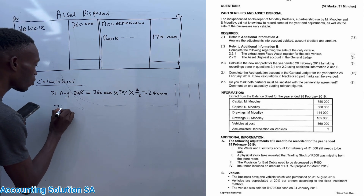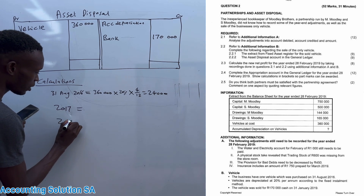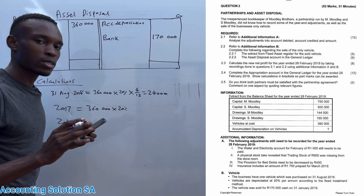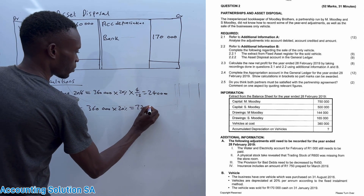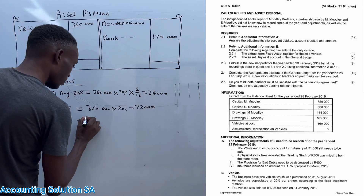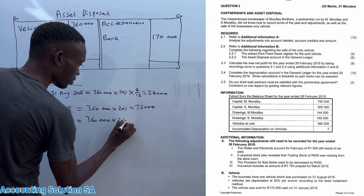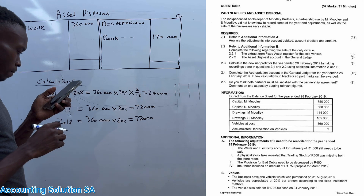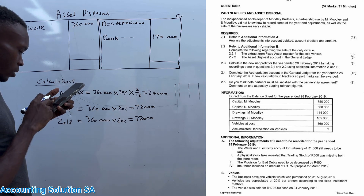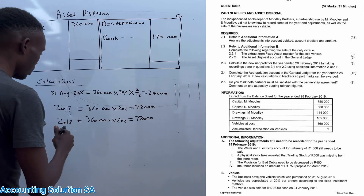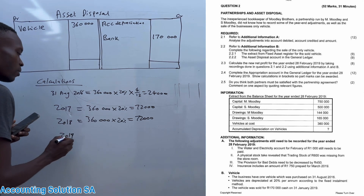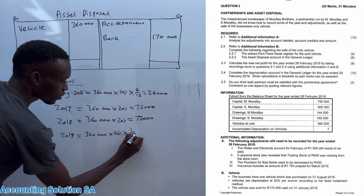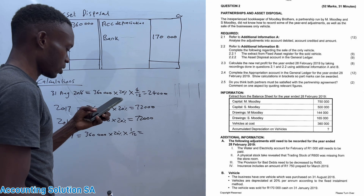Now for the whole year of 2017: 360,000 × 20% — we don't count months here because it's the whole year — giving us 72,000. For 2018, same calculation for the whole year: 360,000 × 20% = 72,000. Then for 2019, the vehicle was sold on 31 January 2019, which means only one month in 2019: 360,000 × 20% × 1/12 = 6,000.